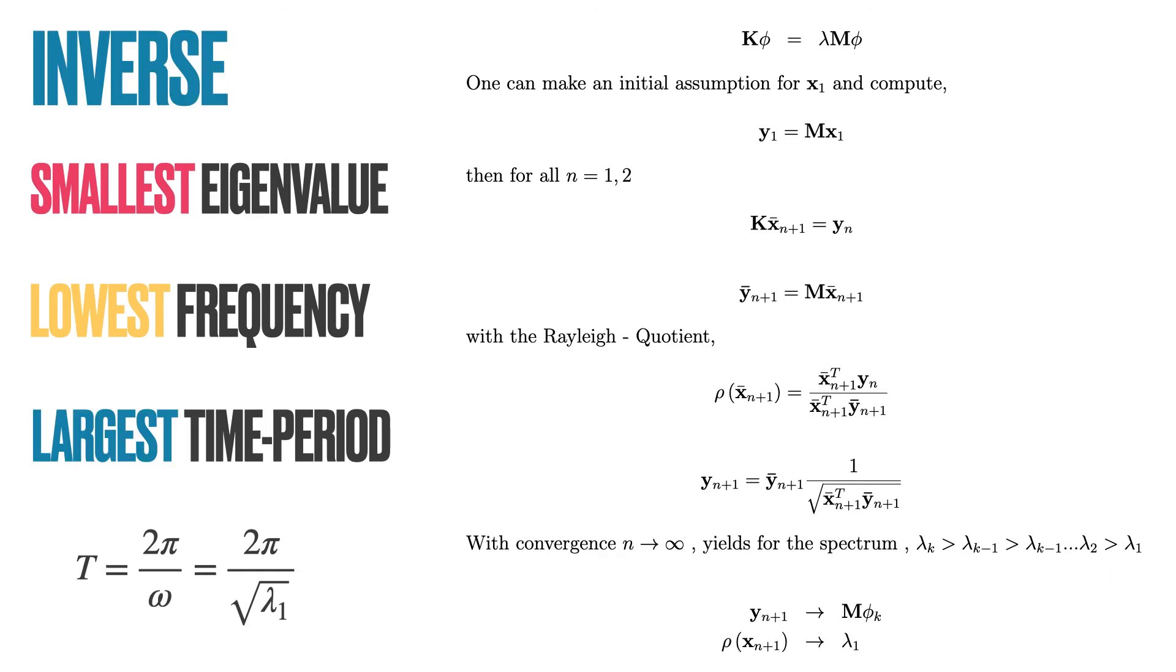The procedure for the inverse iteration is similar. The solution will be the smallest eigenvalue and the lowest frequency. As the frequency is small, the time period will be large. That is, will be the largest time period.